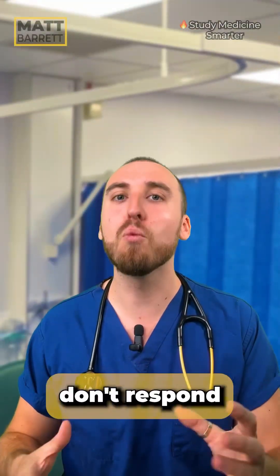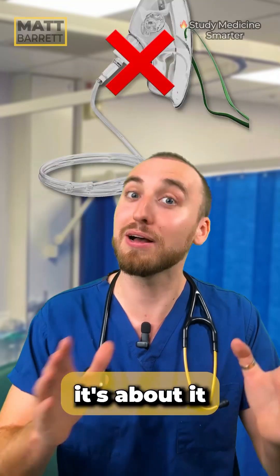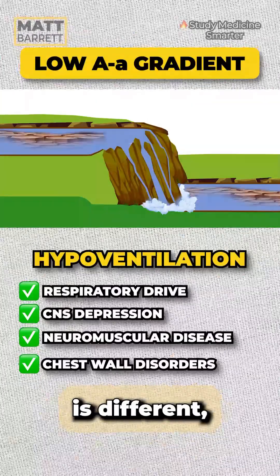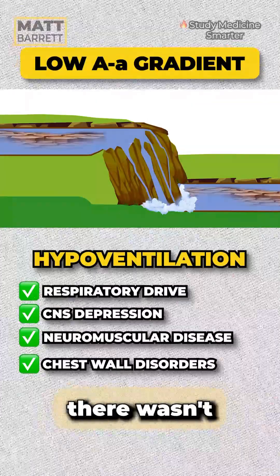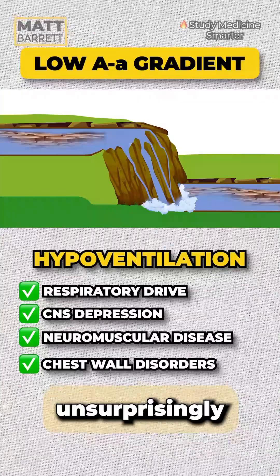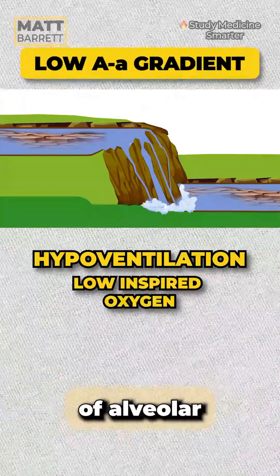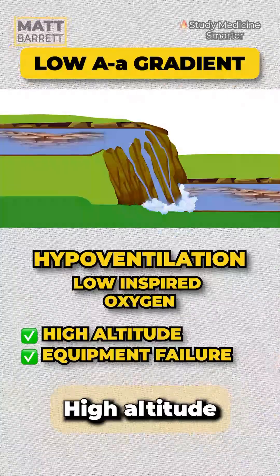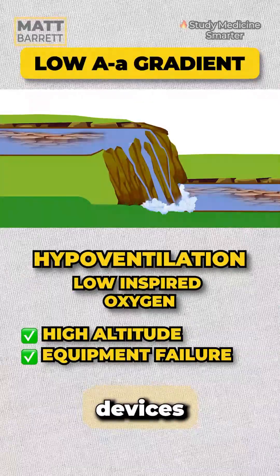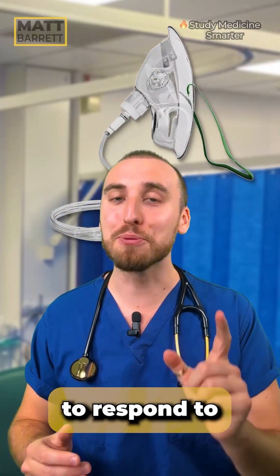Importantly, these patients don't respond well to extra oxygen, because the problem isn't about getting extra oxygen — it's about it getting its way into the blood. Whereas a low AA gradient is different. It means there wasn't enough oxygen at the top to begin with. The river's already dry at the top, so unsurprisingly it's going to be dry at the bottom as well. So here we're thinking of the causes of alveolar hypoventilation, high altitude causing a reduced fraction of inspired oxygen, or perhaps the oxygen delivery devices aren't working properly. These are the patients most likely to respond to more oxygen.